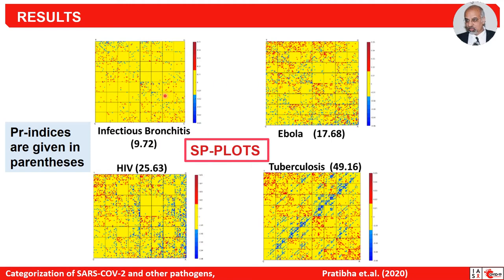These subtraction plots are obtained from the reference plot of coronavirus compared against the other viruses. There is an unambiguous increasing dissimilarity: as the proximity index given in parentheses increases, the dissimilarity level also increases. For tuberculosis there is a lot of dissimilarity, and the proximity index value is almost 50.